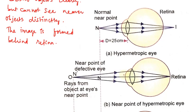Now in this ray diagram, this point is the near point for a normal eye, and this N prime is the near point of the defective eye, which is farther from the least distance of distinct vision. When the object is at this particular point for a hypermetropic eye, then the image is formed on the retina.